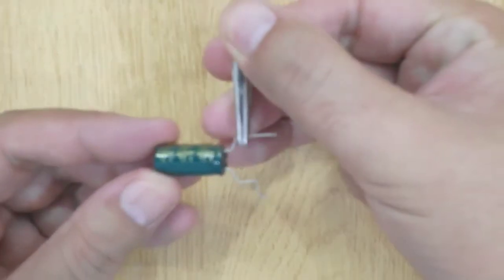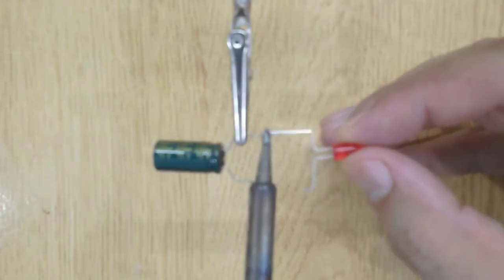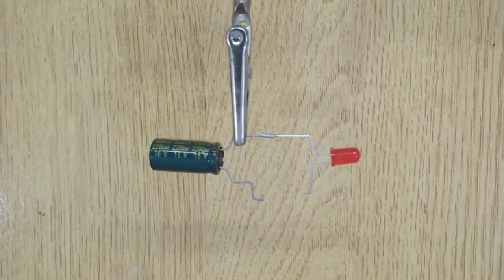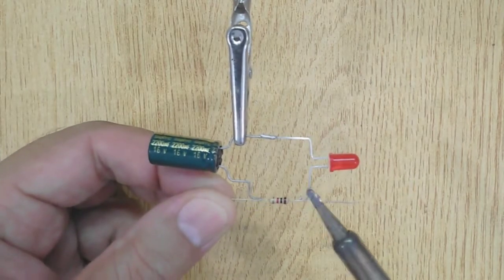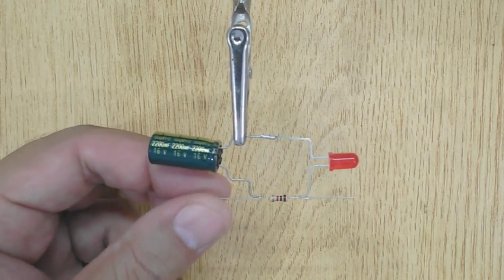Let's solder the components. First solder the negative terminals of LED and capacitor. Now solder 1K resistor with the positive terminal of LED and then solder it to the positive terminal of capacitor.